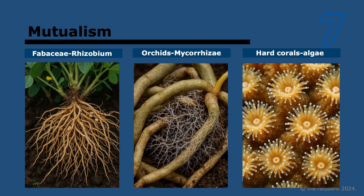Let's look at mutualism with three examples. First, many plants in the legume family develop a mutualistic relationship with Rhizobium bacteria, which appear in root nodules. The plant provides the bacteria protection, supplies of sugars from photosynthesis, and a low oxygen concentration they need. In return, the bacteria provide nitrogen in the form of ammonium to the plant, preventing nitrogen deficiency — often a problem for this type of plant.